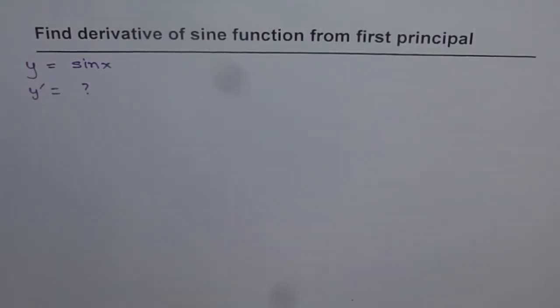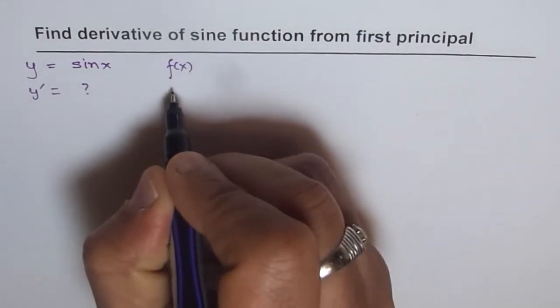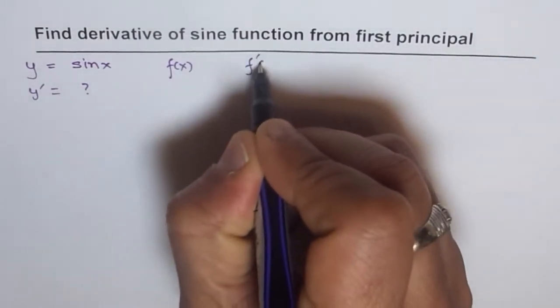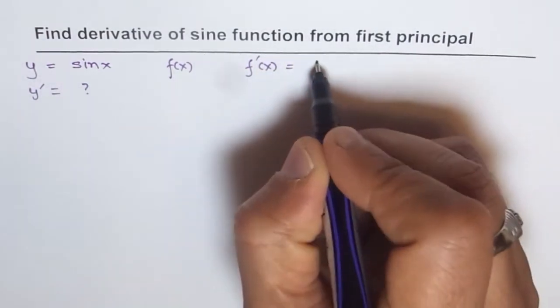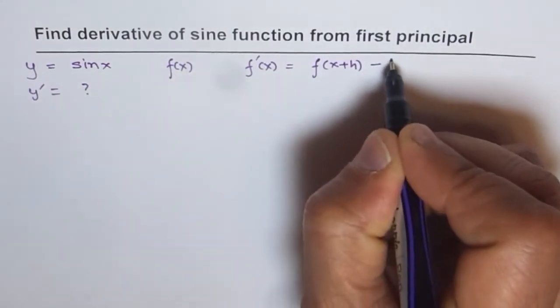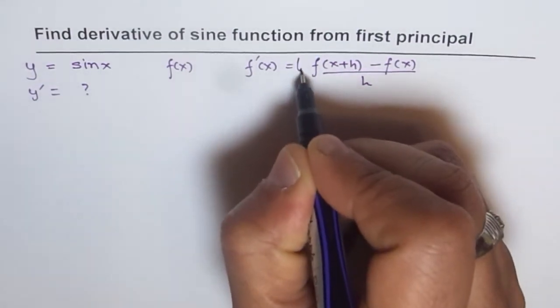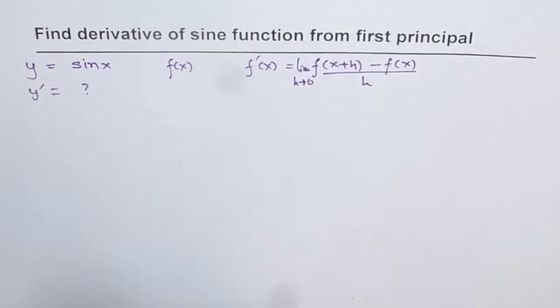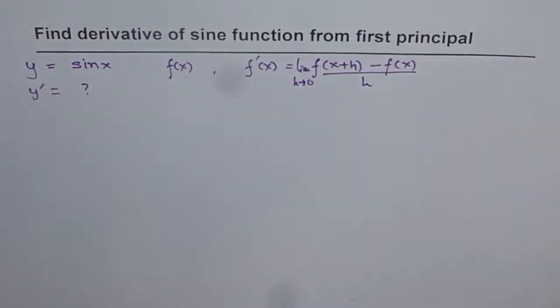By first principle we mean when we do rate of change. If we have a function, let's say f of x, then what is f dash of x? That we did with first principle saying that f dash of x should be f of x plus h minus f of x over h, where limit h approaches 0. That is first principle, and we are going to use this to find the derivative for sine function.